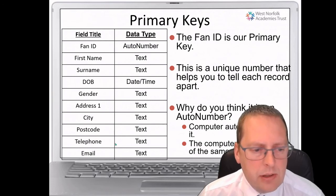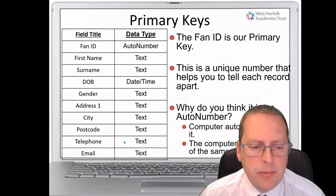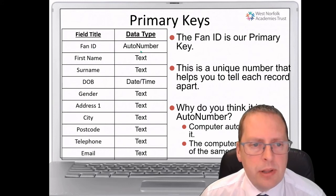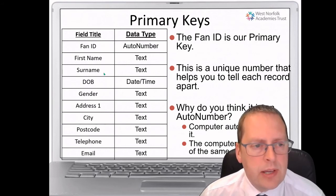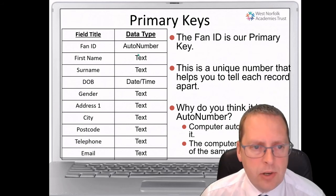Text is used for a telephone number because the number often starts with a zero, and computers don't recognise the zero at the front of a number — they just remove it. There's also often a space in a telephone number. The fan ID is auto number. This is known as a primary key — it is unique to this fan. No two fans will have the same fan ID, so it's a primary key. You could have two people with exactly the same name, but they'd each have a unique individual fan ID.